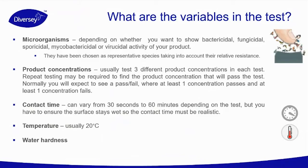The second variable is product concentration. Usually in an external laboratory, we will test three different product concentrations and repeat testing. You normally expect to see a pass-fail result, but at least one concentration needs to pass and one needs to fail. Then we have contact time, which can vary from 30 seconds to 60 minutes depending on the test, but you must ensure the surface stays wet, so the contact time must be realistic.